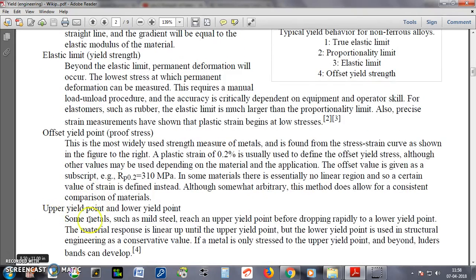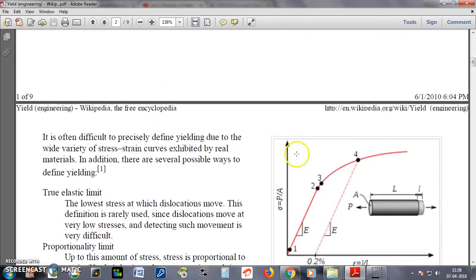After that, this is the upper yield point and the lower yield point. Here we find a yield point phenomena in many of the engineering materials like mild steel and also in some aluminum alloys as well. It's a yield point phenomena where we can find the upper yield point and the lower yield point over here, though we are not viewing this point in this particular stress-strain curve.